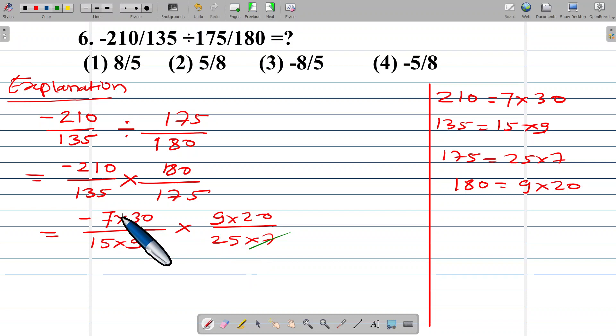7, 7 gets cancelled, negative 1 right. 15, 2s are 30, 9, 9 gets cancelled.